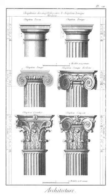Estrade: French term for a raised platform or dais. In the Levant, the estrade of a divan is called a sofa, from which comes our word sofa.